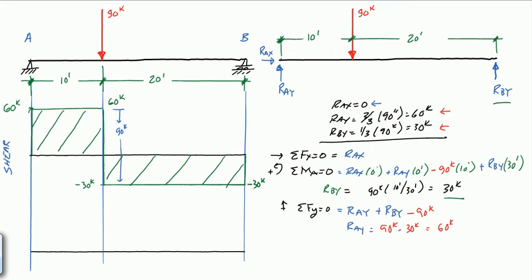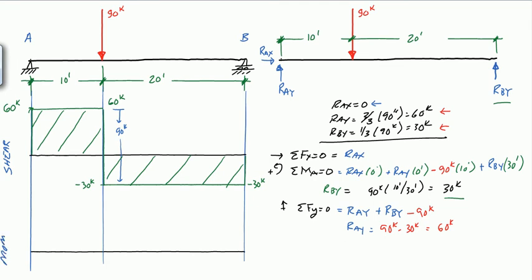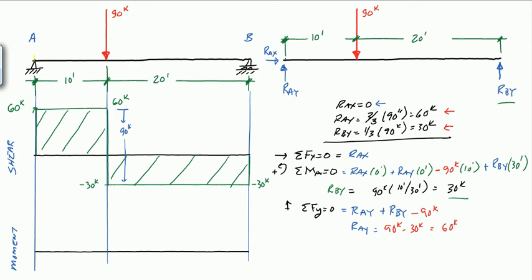You can see we end up at the far right end with the same value as our right-end reaction — a useful check. Next, we look at the moment diagram. Because we have a pin at the left end and a roller at the right end, the moment at both ends is zero. We also know the maximum moment occurs where the shear diagram crosses the axis.